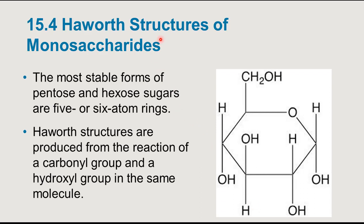Haworth structures are the cyclic representations of monosaccharides. The most stable form of any pentose or hexose sugar is a five- or six-atom ring. Instead of being linear, what happens is a reaction in which the terminal hydroxyl attacks the carbonyl, forming a ring. The Haworth structures are produced from the reaction of a carbonyl group and a hydroxyl group within the same molecule — very similar to hemiacetal and acetal reactions for aldehydes and ketones.